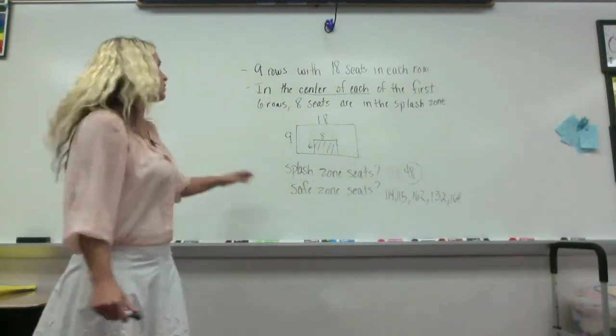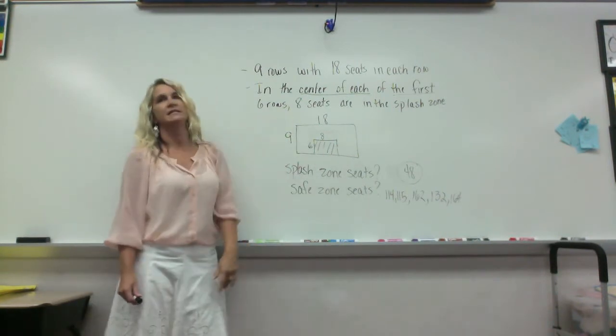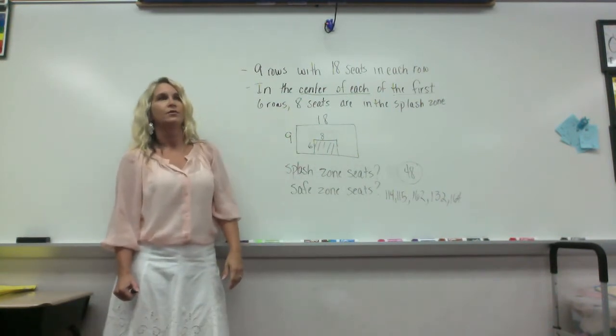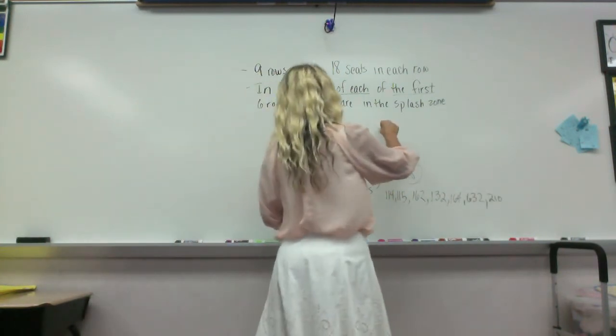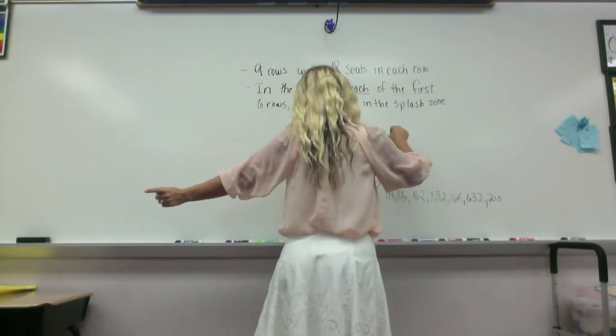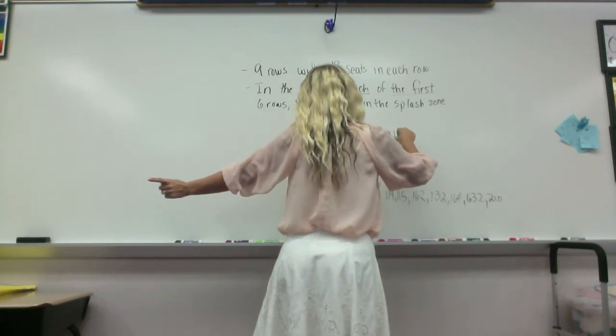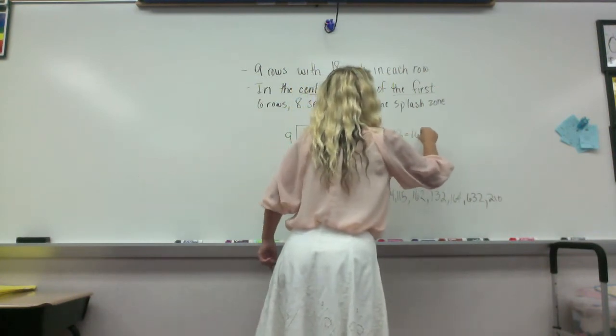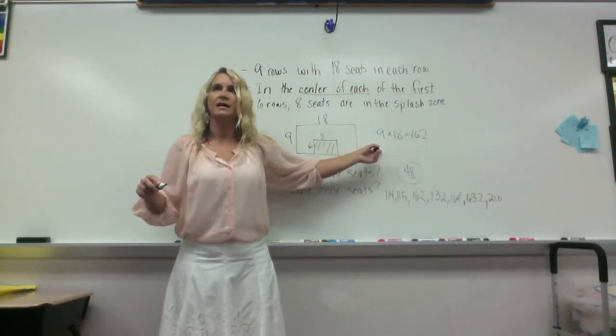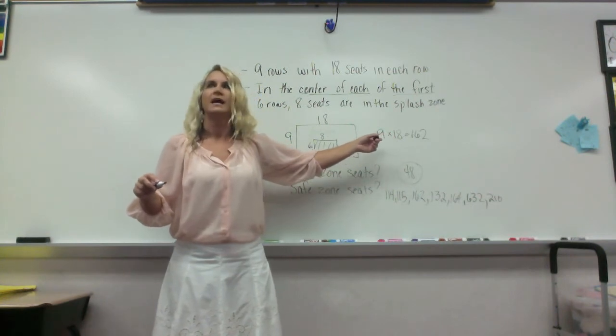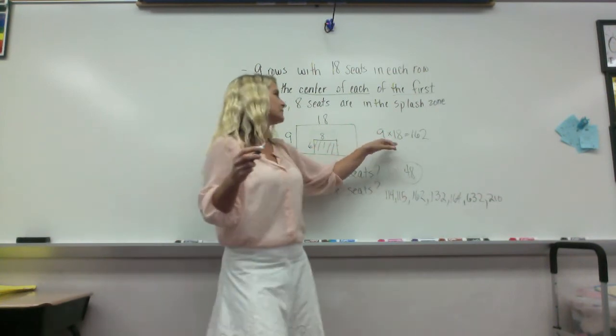Okay, what did you guys get, Savin? We have a lot of different answers. So let's talk about how can we find out how many seats are safe. Who would like to share their method? How many of you got 18 times nine equals 162? How many of you got that? 18 times nine equals 162.